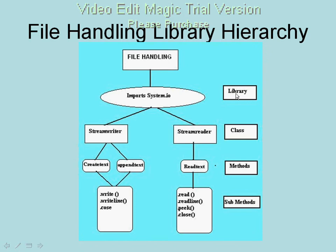Once you declare the library, you have two main classes: StreamWriter and StreamReader. StreamWriter has methods — as we know, a file can be created or a file can have text appended. The disadvantage of the CreateText method is that you can create a file, but every time you run the application your previous data is overwritten by new data.